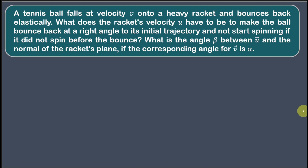In this question, it is given that a tennis ball falls at a heavy tennis racket with velocity v, and at that particular instant the velocity of the racket is u. This velocity vector of the racket is making angle beta with the normal direction. So at the point of contact, u vector is making angle beta and v vector is making angle alpha with the normal. We have to determine the value of beta as well as the racket's velocity u such that certain conditions are followed.